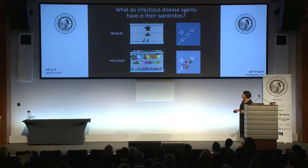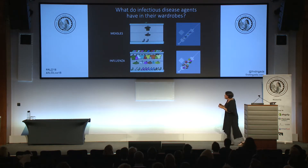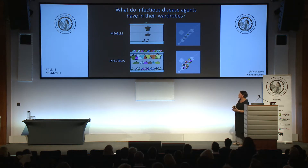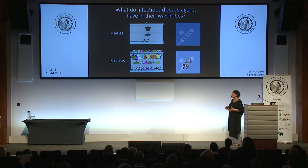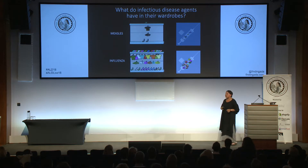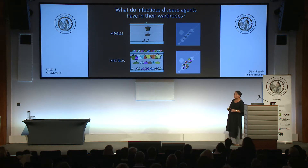So, what do infectious disease agents have in their wardrobes? Within this analogy, you can understand why certain diseases, like measles, are ones for which we have very good vaccines, while others, like influenza, we struggle to make good vaccines against. Effectively, within this analogy, measles has a very basic, very limited wardrobe — you could say it has a very measly wardrobe.